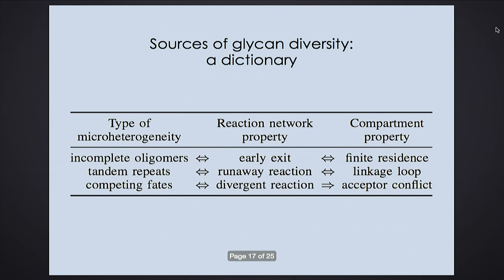We've made a dictionary between three different kinds of entities. One entity is the kind of diversity in the collection of products: incomplete oligomers, tandem repeats, or competing oligomers. These three types of micro-heterogeneity are related to three properties of the reaction network: early exit from intermediate nodes, an infinite runaway reaction, or a divergent reaction that never reconverges. And the reaction network properties relate to which enzymes are in the compartment.